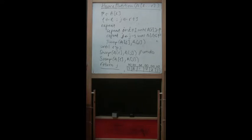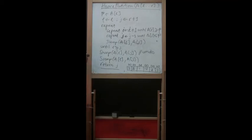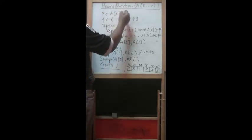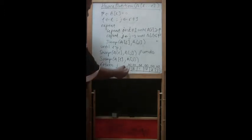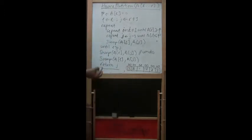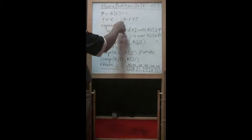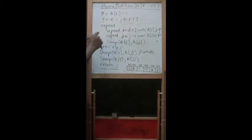This is the second partition algorithm called Hoare's — basically the same goal: to obtain the pivot, partition the array, and do the rest of the procedure. The pivot here is based on L equal to 0, so taking the same example, P equals 2. I equals L equals 0, and J equals R plus 1.